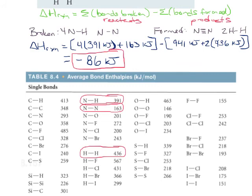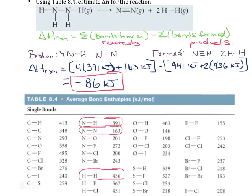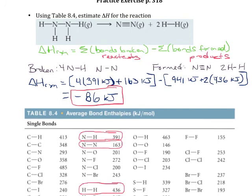Again, this is pretty straightforward — just follow along with that equation: bonds broken minus bonds formed. Remember that bonds broken are in the reactants and bonds formed are in the products. Make sure you're considering how many of each type of bond. It's not enough just to say there is a broken nitrogen-hydrogen bond; you need to figure out that there are four of them. Those coefficients are very important, so pay careful attention to those. And if they don't give you the Lewis structure, you'll just need to draw it yourself.